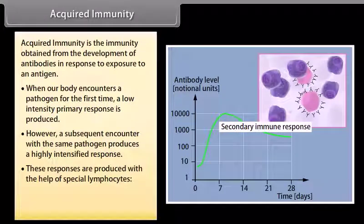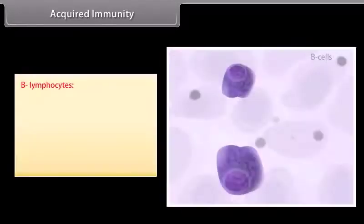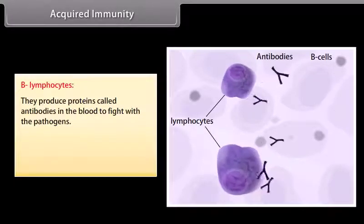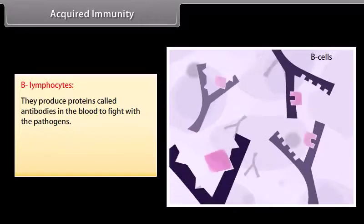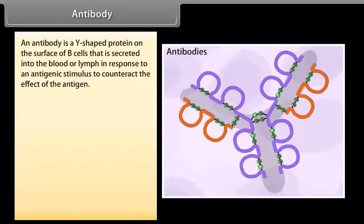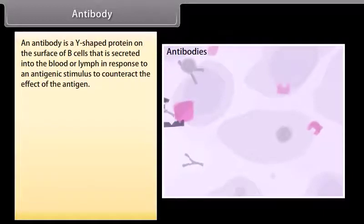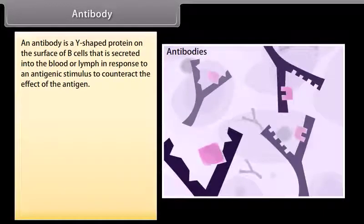These responses are produced with the help of special lymphocytes: B-lymphocytes and T-lymphocytes. B-lymphocytes produce proteins called antibodies in the blood to fight pathogens. T-lymphocytes help the B-cells to produce antibodies. An antibody is a Y-shaped protein on the surface of B-cells that is secreted into the blood or lymph in response to an antigenic stimulus to counteract the effect of the antigen.